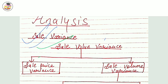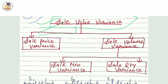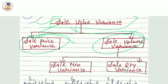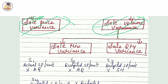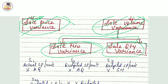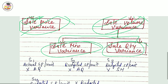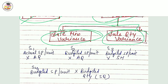Sales variance is divided into two parts. The first part is sale price variance and the second part is sale volume variance. Sale volume variance is further divided — so in total we have: sale value variance, sale price variance, sale volume variance, sale mix variance, and sale quantity variance.